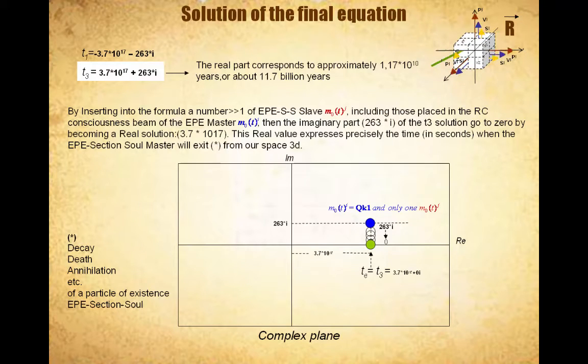This complex solution expresses the time in seconds in which the existence of the quark 1 particle will exit from our 3D space. The real part of the T3 solution corresponds to approximately 1.17 times 10 to the 10 years, that is about 11.7 billion years. This value could represent the time to decay or death of the quark 1.